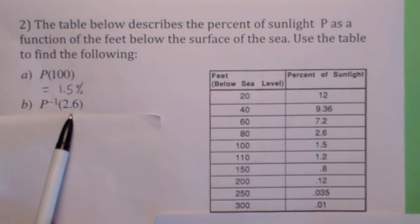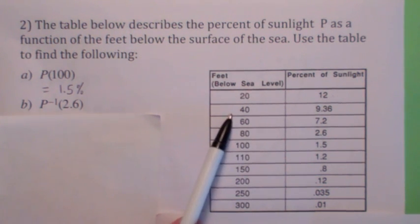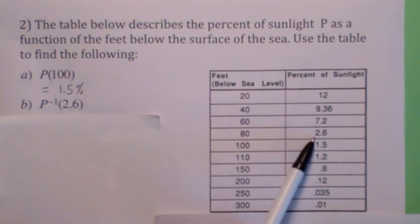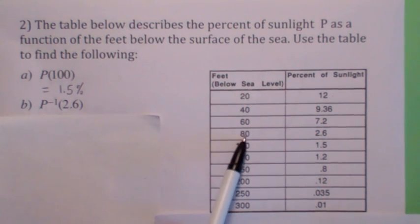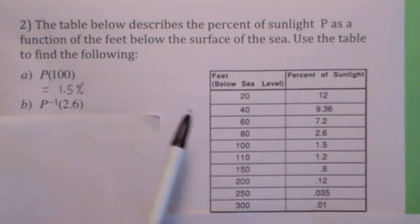So what would p inverse of 2.6 be? Remember, p inverse of 2.6 is the value of x when y equals 2.6. So you go over to when y is 2.6, and the p inverse of 2.6 becomes 80 feet.